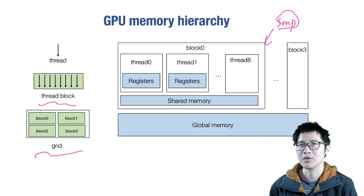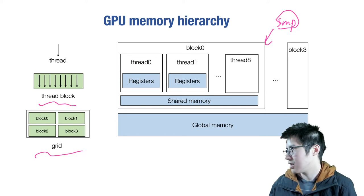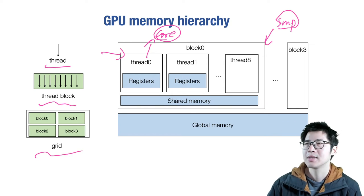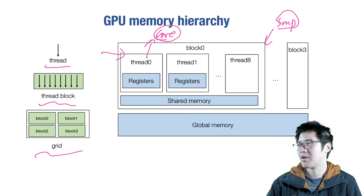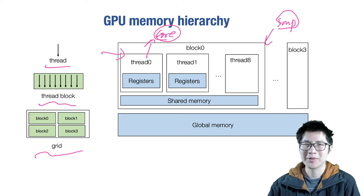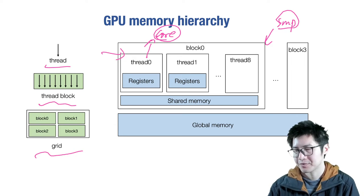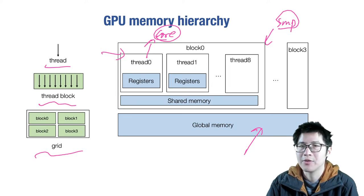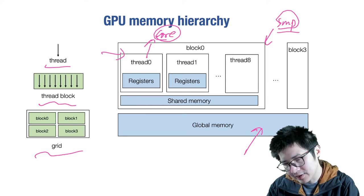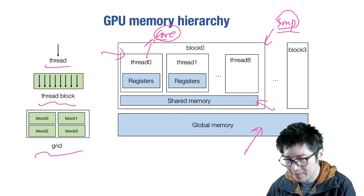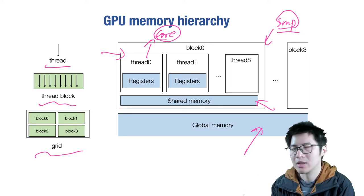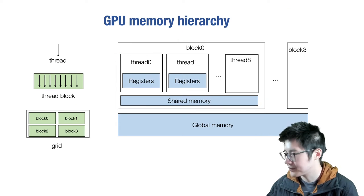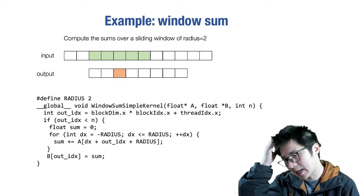Each thread block gets mapped onto one Streaming Multiprocessor, and in many cases several thread blocks can be mapped onto the same SM. Each thread gets mapped onto a single computing core within that SM. This is why we have the two-level hierarchy. The global memory corresponds to the GPU DRAM — the memory you get when you call cudaMalloc and cudaFree. Within a Streaming Multiprocessor there is shared memory accessible by all threads within a thread block. Each thread also has its own local registers.